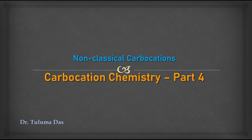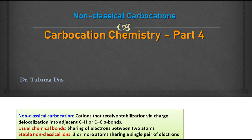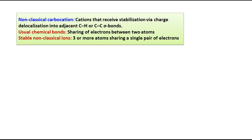Carbocation chemistry part 4 will be all about non-classical carbocations. Before going to the discussion, please watch the previous videos of carbocation chemistry — you can click on the playlist link appearing on the screen or find it in the description box. So, what is a non-classical carbocation? Since it's called non-classical, there must be some difference from the usual carbocation, which is a classical carbocation.